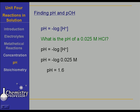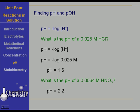So the pH — you put in your 0.025, hit log, and change sign — and you get the pH as 1.6, pretty strongly acidic. What's the pH of a 0.0064 molar nitric acid solution? The pH was 2.2, because the concentration of the hydrogen ion is the same as the concentration of this strong acid. So we take the negative log of 0.0064, and it comes out to be 2.2.